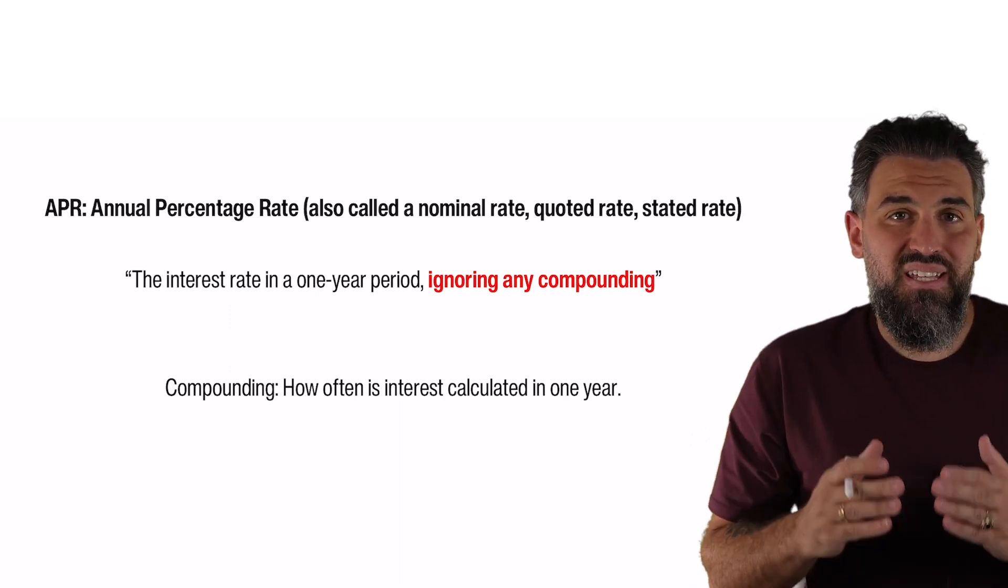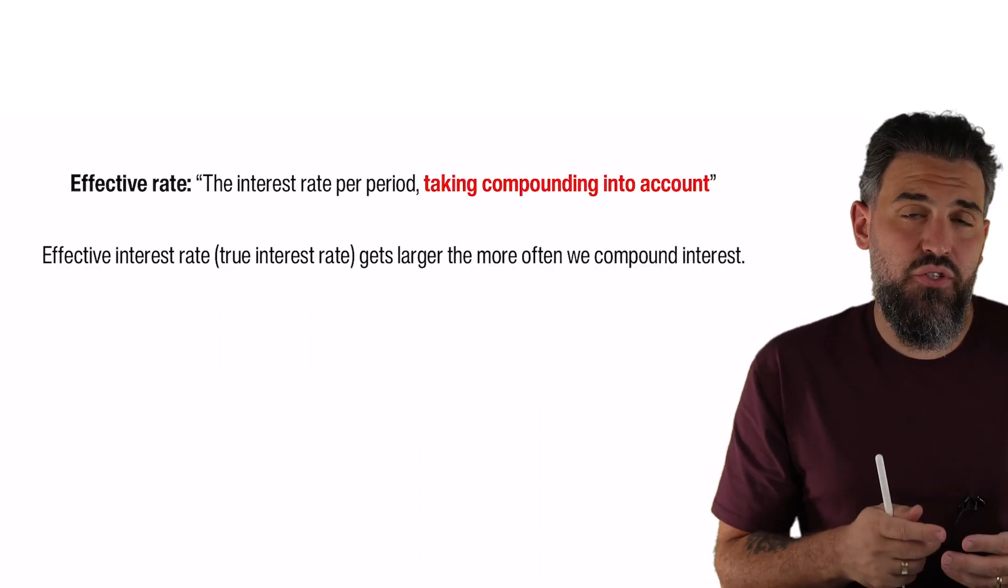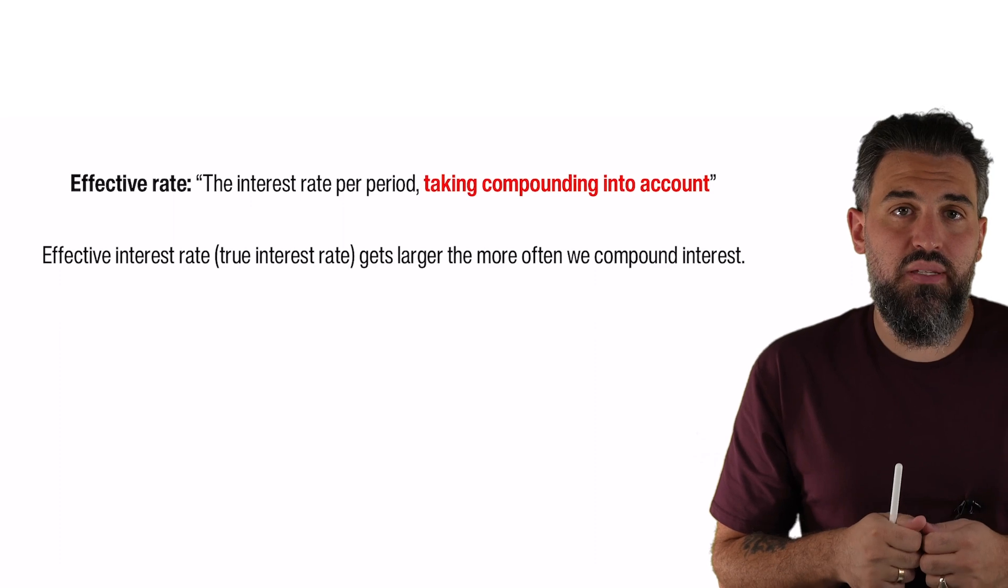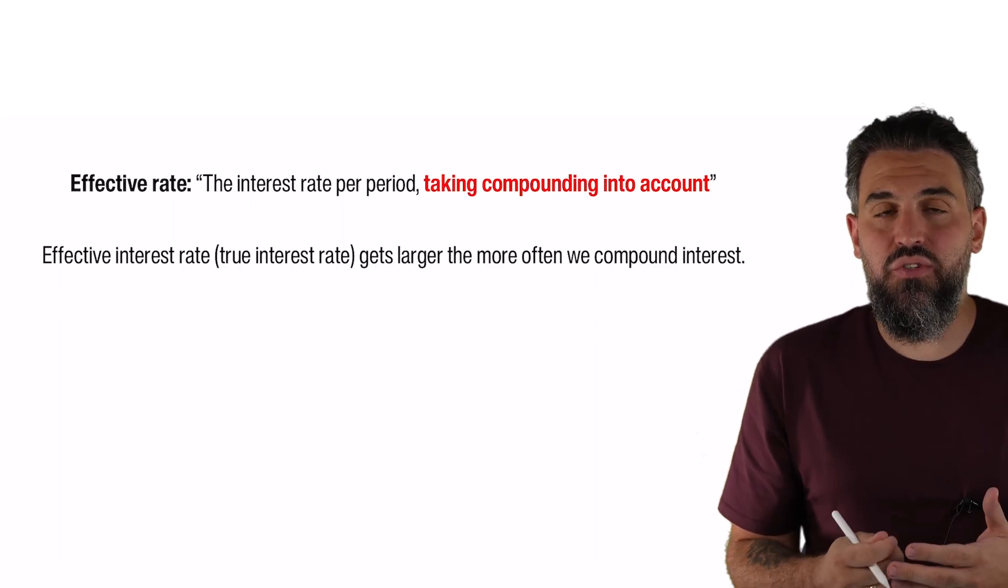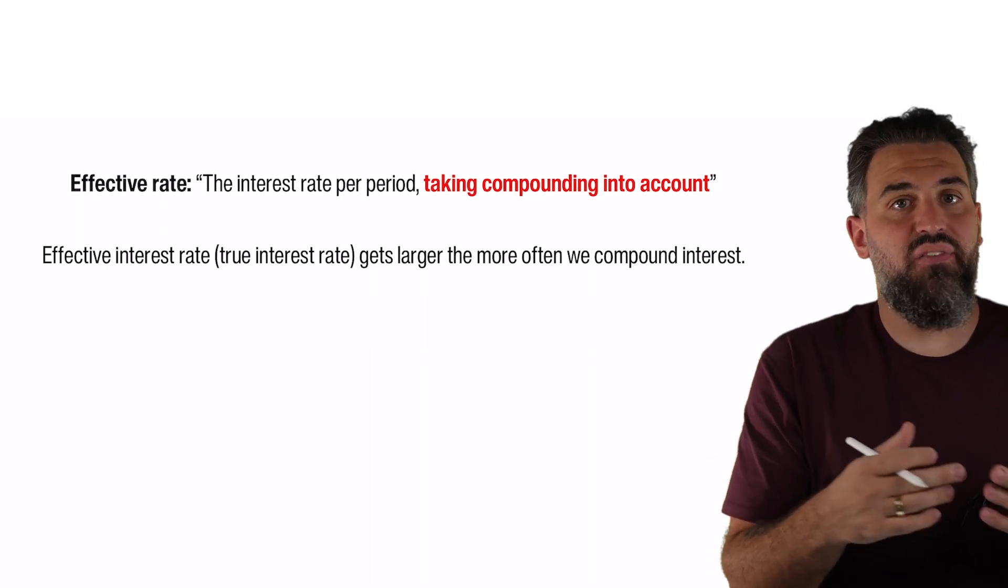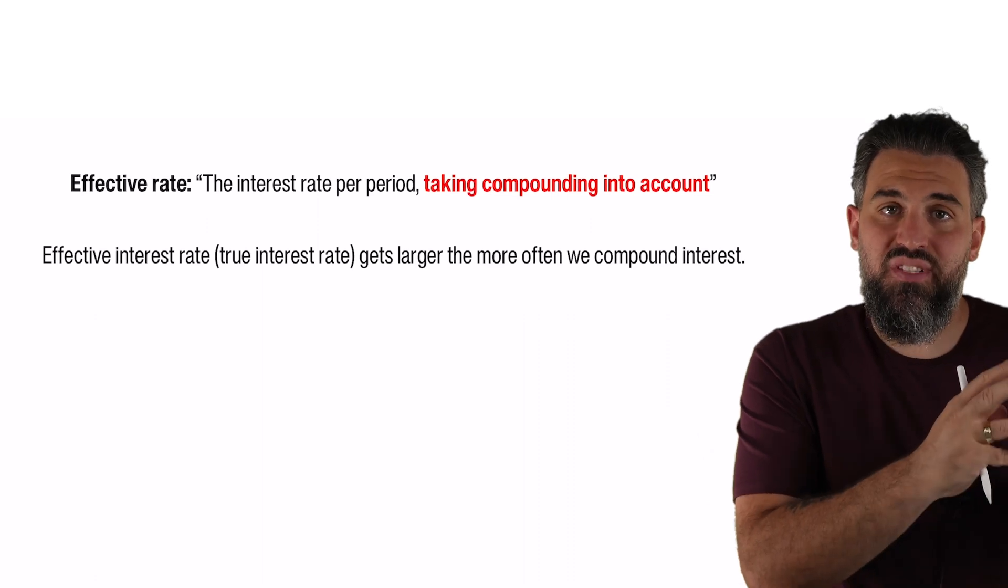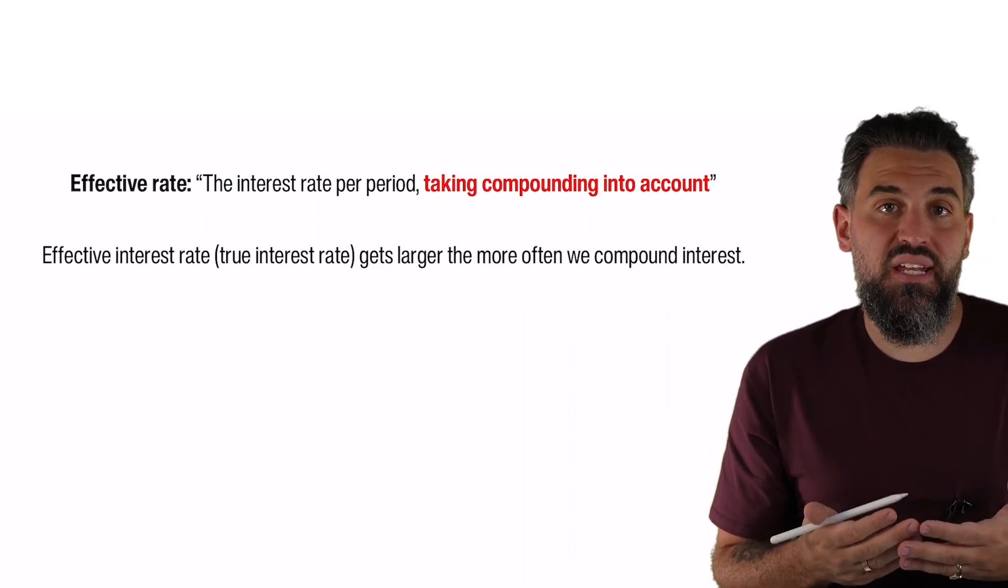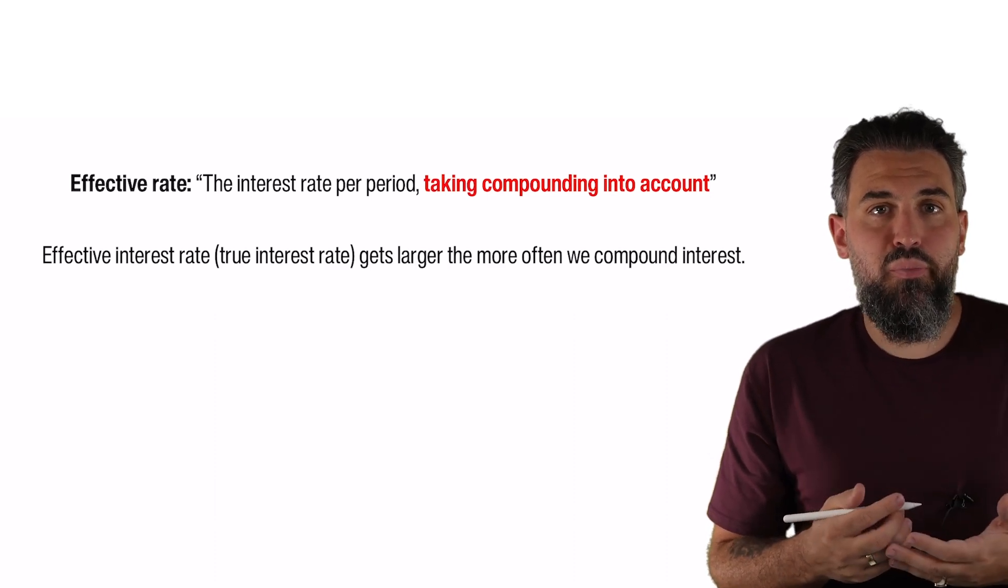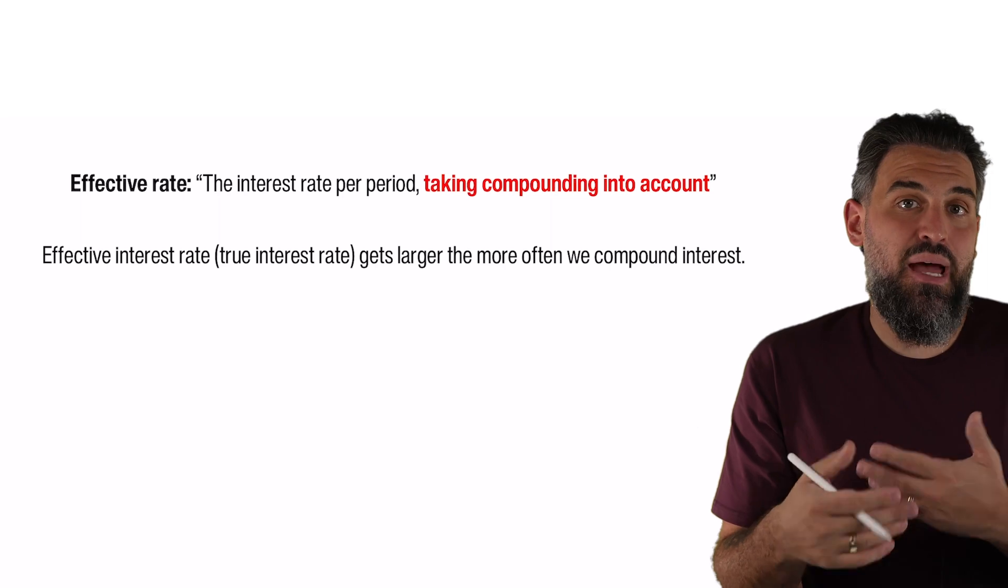The effective interest rate is the actual interest rate that applies to your particular situation. Now an effective interest rate can be annual—we call that an effective annual rate—but it can also be monthly, quarterly, weekly, whatever. Whereas an APR is always annual, an effective rate can be for any period. One thing that's important to understand is the more often you compound, the higher the effective interest rate gets. Now let's hop over to an example to see how that works.